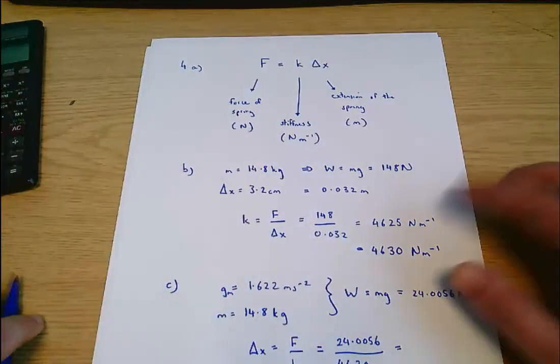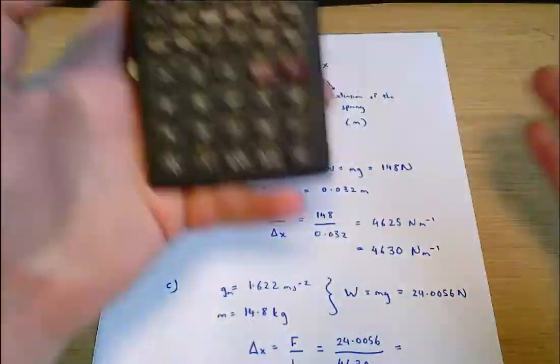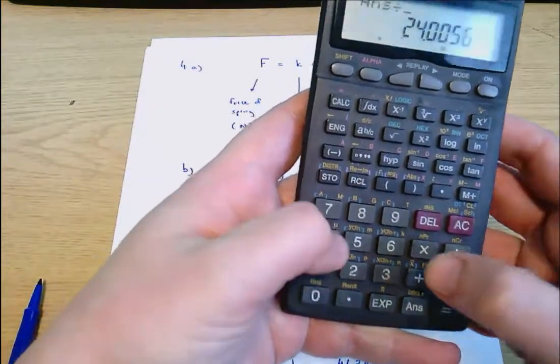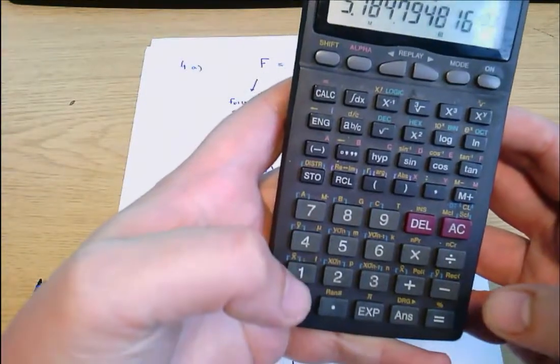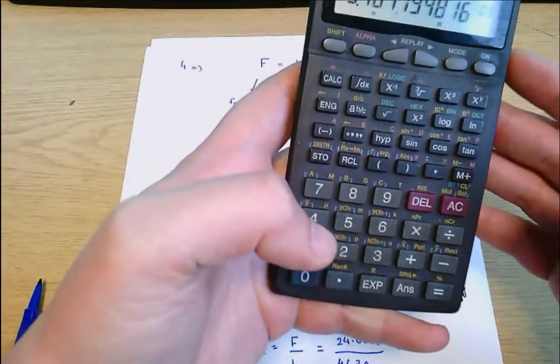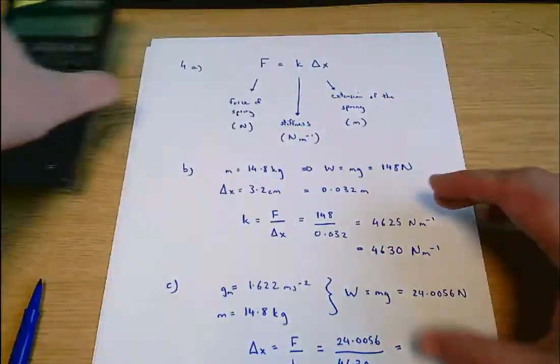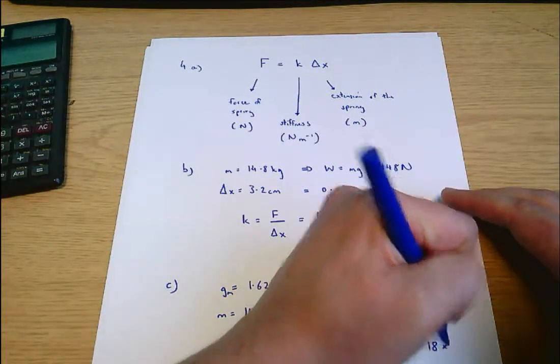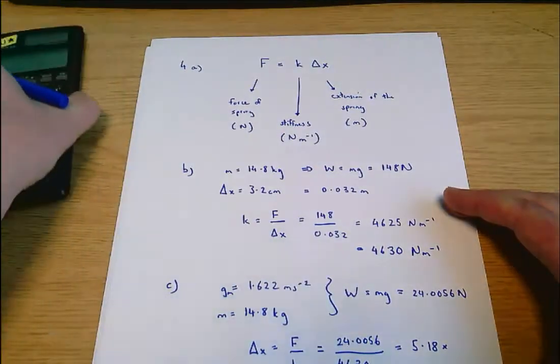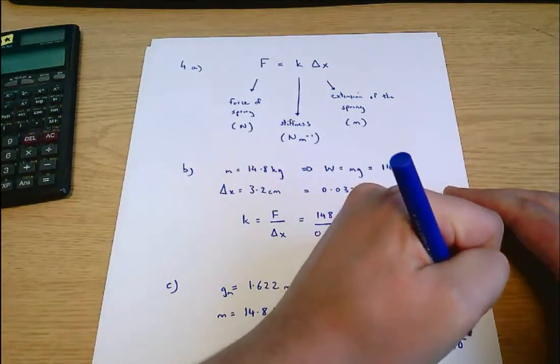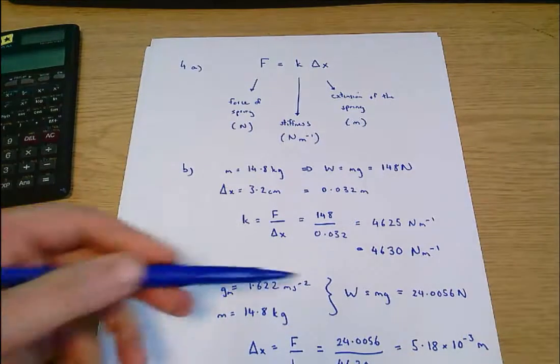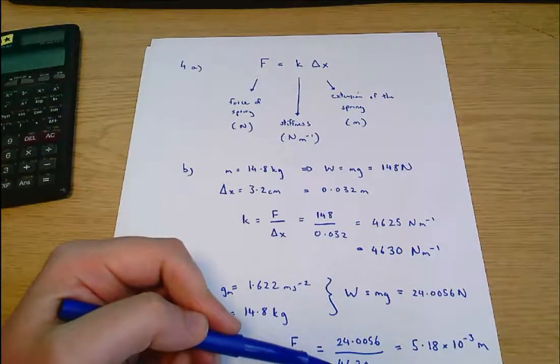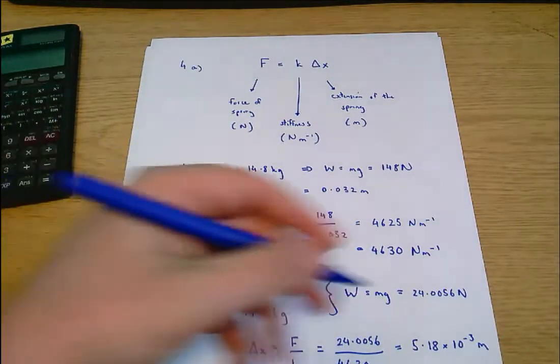I could have used 4625. It's not going to make a huge difference. It's 5.184. So I can call that 5.18 times 10 to the minus 3 meters. This is in newtons. This is in newtons per meter. So the answer is in meters.